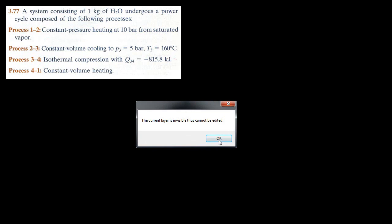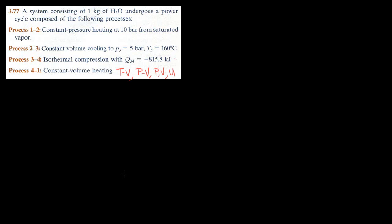In this problem we're given a system that consists of one kilogram of water and it undergoes a power cycle composed of several listed processes. I want to identify the TV diagram, the PV diagram, and identify the pressure, volume, and internal energy at each state — state one, two, three, and four — using thermodynamic tables.